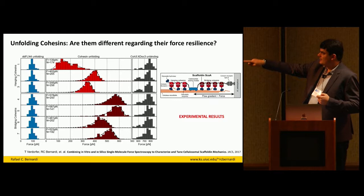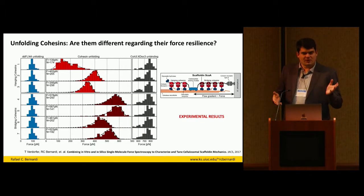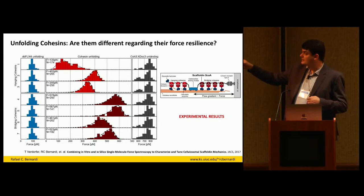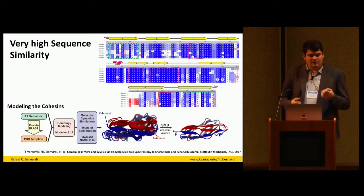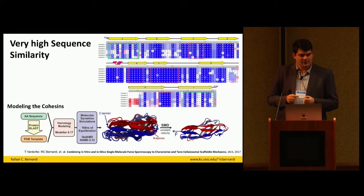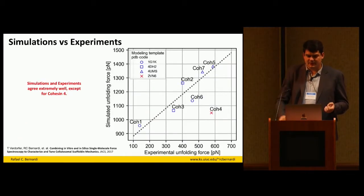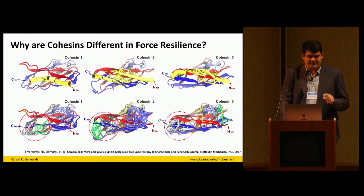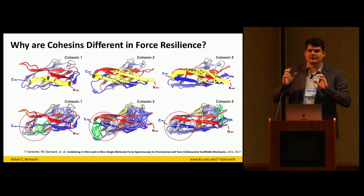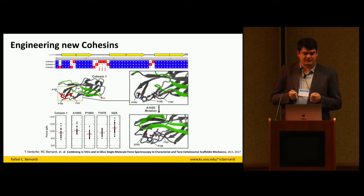What we saw is that even though they're very similar in sequence, some of them are much weaker than others. Cohesin one at the top can handle just over 100 piconewtons of force, which is not remarkable, while some of them can reach almost 600 piconewtons, which is quite remarkable. None of the structures were available, so we used modeling techniques to get them, and what we got was very good agreement between simulations and experiments — both gave us about the same behavior.